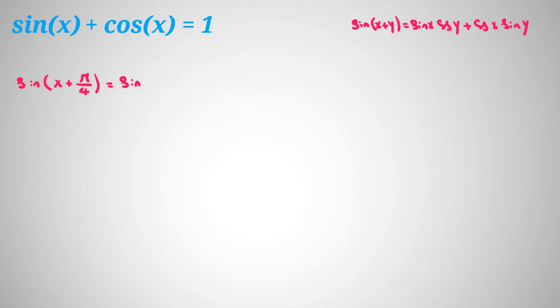it will be sin x times cos pi over 4 plus cos x times sin pi over 4. Why is this good? Because you should memorize that cos 45 or pi over 4 equals sin pi over 4 equals root 2 over 2.